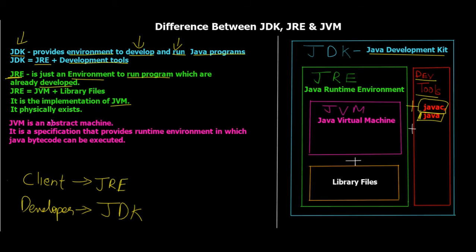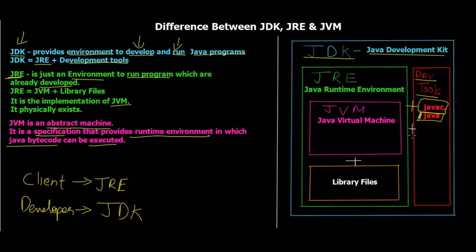As you can see, I've written JVM in pink. JVM is an abstract machine — it is not a physical entity. It is just a specification that provides the runtime environment, the JRE, in which Java bytecode can be executed. JVM is this pink box, and JVM plus the library files make up JRE. There are external library files that assist with running the entire program in the JVM or the Java runtime environment.